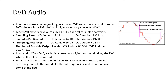If your receiver is Dolby Digital ready but does not have a Dolby Digital decoder, you need to buy a DVD player with its own Dolby Digital decoder and 5.1 channel outputs. If you also want DTS sound, your DVD player will need a DTS decoder too. But if your receiver has its own Dolby Digital and DTS decoder, you don't need a DVD player with 5.1 channel outputs, and you can save money on cables by using digital outputs.